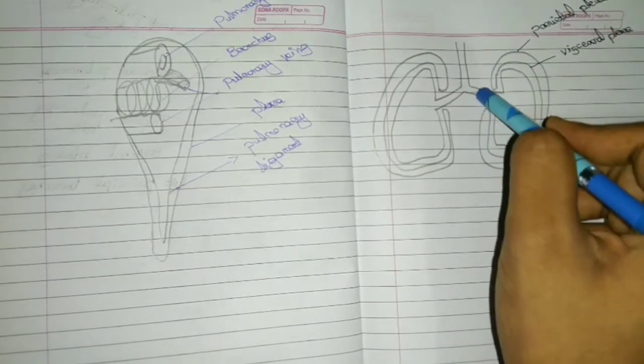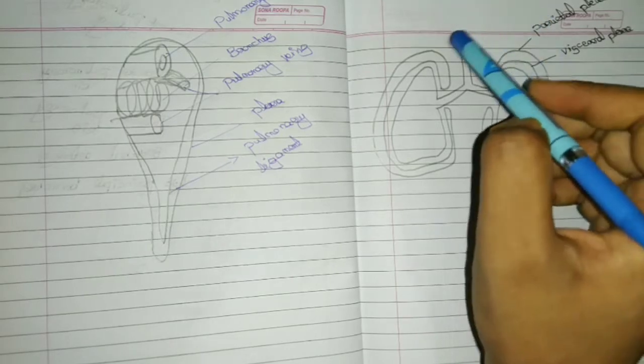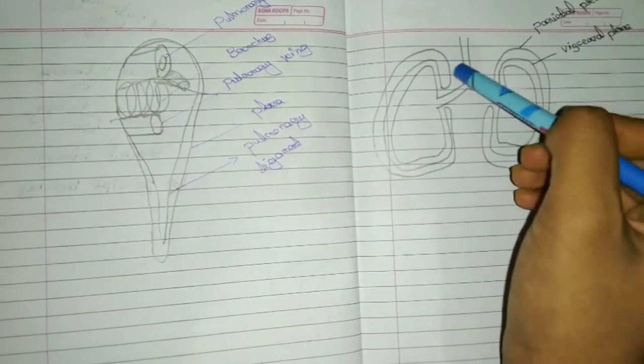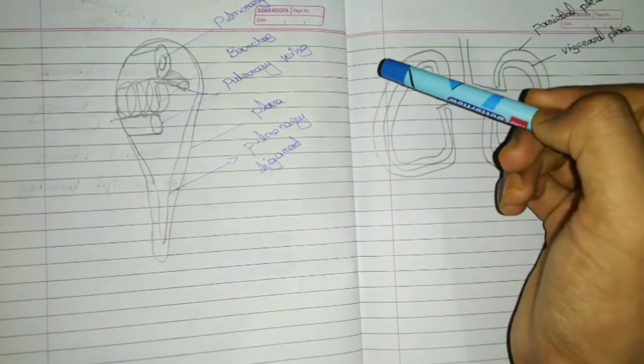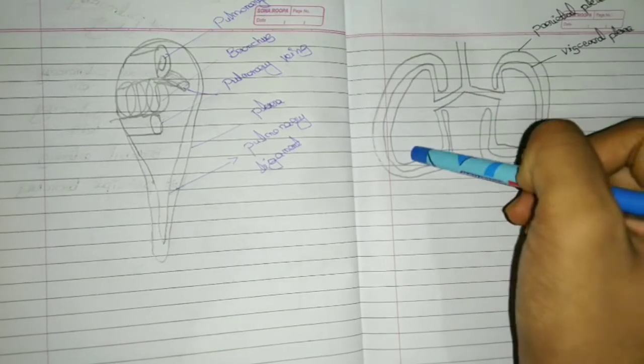Pleura that surrounds the root of lung. This is similar to the sleeve of a jacket.